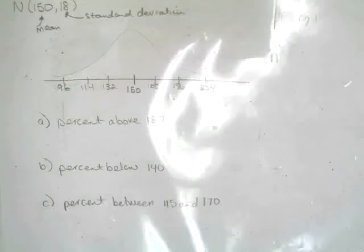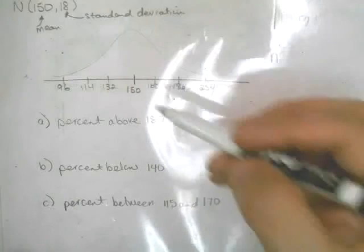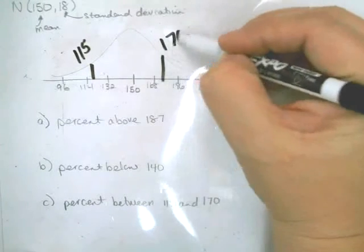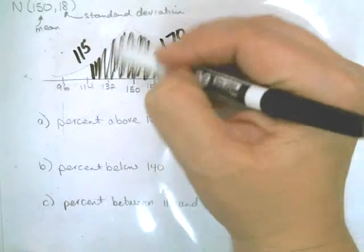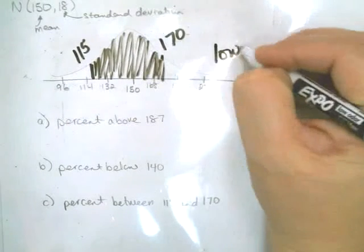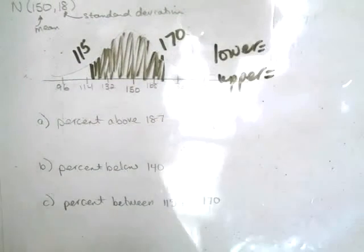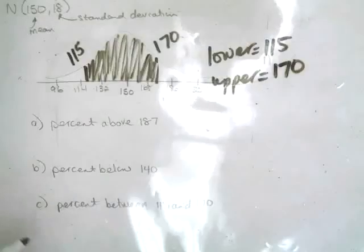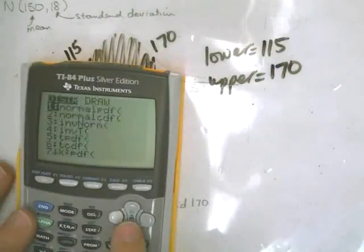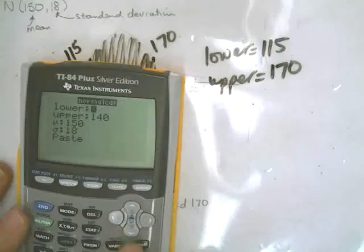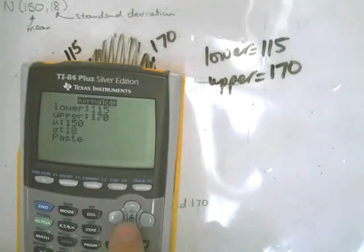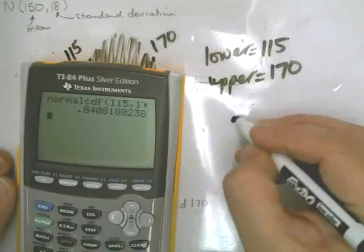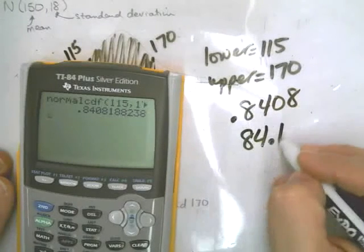The next question: what happens if it's between 115 and 170? You still have to figure out your lower and upper bounds. The lowest part of the shaded region is 115 and the upper part is 170. So again, second distribution, Normal CDF, lower is 115, upper is 170, mean and standard deviation are the same. The result is 0.8408, so 84.1% of the data is between 115 and 170.